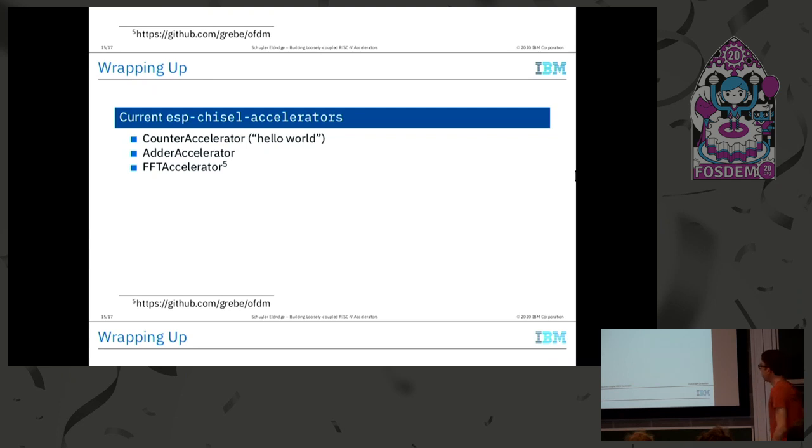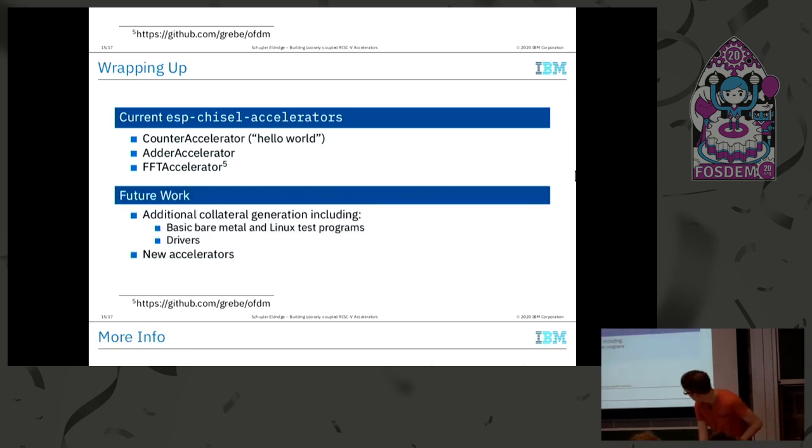Wrapping all this up, we currently have three ESP Chisel accelerators. Two of them are toys, one of them is not. There's a counter accelerator which is just report done after N cycles, there's this adder accelerator that we have, and we also have an FFT accelerator that integrates work from UC Berkeley on building nice fast efficient FFTs. Future work for this kind of stuff: this notion of emitting extra XML, you could also think about emitting test benches, emitting Linux drivers, trying to make it just dead simple for people to go and write hardware. But also, if they don't want to use the SystemC HLS high-level synthesis kind of approach, they can do this but still get the benefits of all the collateral that automatically gets generated.